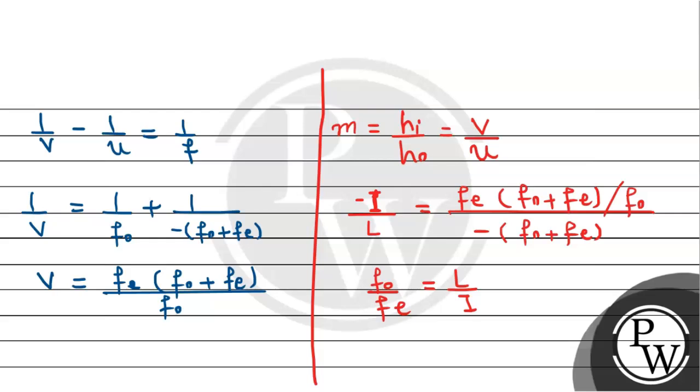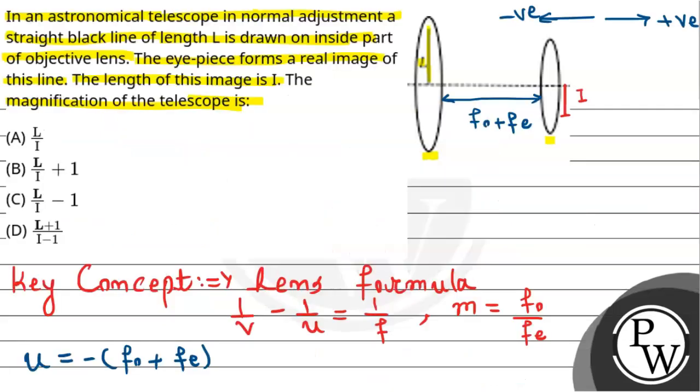Now F_O by F_E is the angular magnification for the astronomical telescope, so this equals L over I. This is our required answer for this question. According to the given options, L upon I, option A is correct. This is the required solution. I hope you understand. Best of luck, thank you.